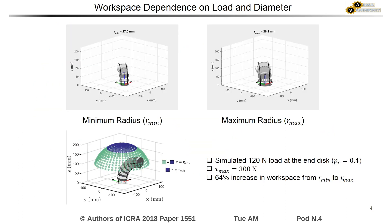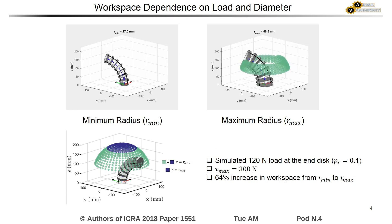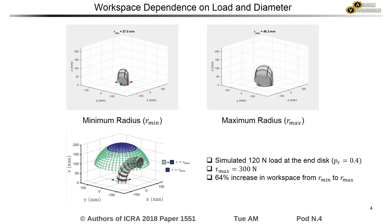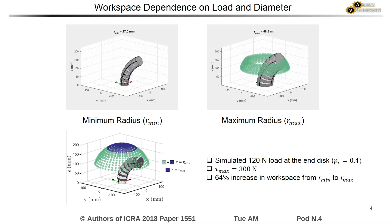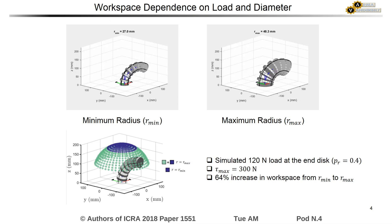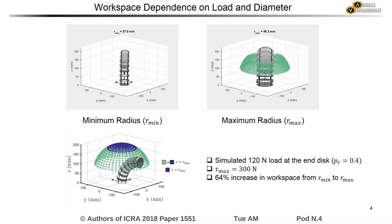Allowing the diameter of the robot to vary introduces kinematic redundancy, which can be used to reduce the load on the backbones. These simulations show the workspace points that a continuum segment is able to achieve while undergoing a 120 N load at its end disk and while staying below a maximum actuator force of 300 N.